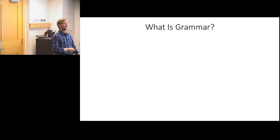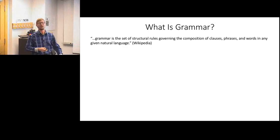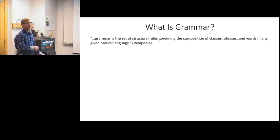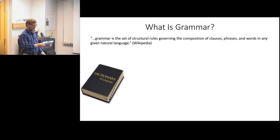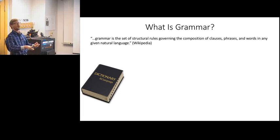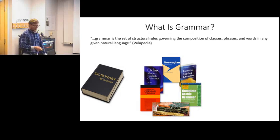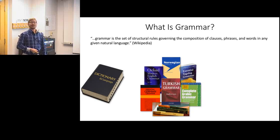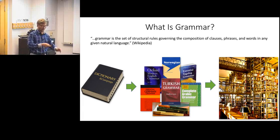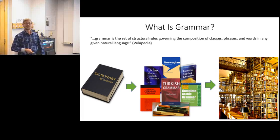So what is grammar? The dictionary definition is that grammar is simply a set of structural rules for the composition of clauses, phrases, and words in any given natural language. To illustrate this: a dictionary is just a collection of words each with its own intrinsic meaning, but if we want to combine them into more complex statements and sentences, we need a set of rules - otherwise we'll end up with nonsense. Those rules are called grammars, and combining words with an appropriate grammar lets us produce an infinite variety of meaningful statements.